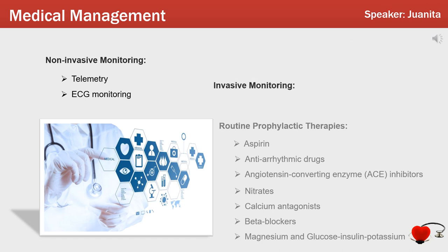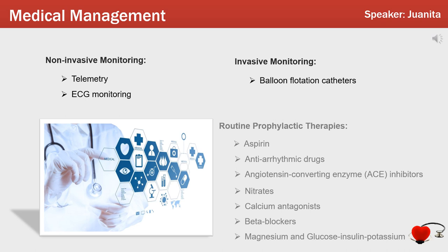Monitoring the recovery of ST segment deviations in the first hours following admission provides important prognostic information and may be helpful for selecting further treatments such as rescue PCI. Invasive medical monitoring: All coronary care units should have the skills and equipment to perform invasive monitoring of arterial and pulmonary artery pressures. Arterial pressure monitoring should be conducted in patients with cardiogenic shock. Balloon flotation catheters are valuable for patients with low cardiac output, permitting measurement of right atrial, pulmonary artery, and pulmonary wedge pressures and cardiac output, and are used in the presence of cardiogenic shock, progressive heart failure, and suspected ventricular septal defect or papillary muscle dysfunction.